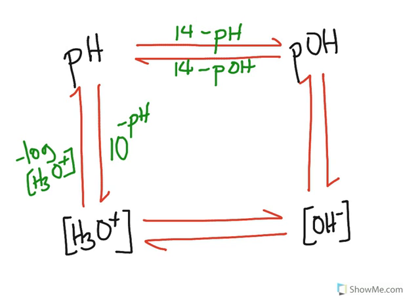Let's go to the right side of the concept map for now. It's sort of the same concept. If I want to go from the hydroxide ion concentration to the pOH, I take the negative log of the OH minus concentration. And if I want to go from pOH to the hydroxide ion concentration, it's 10 to the negative pOH.